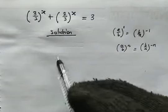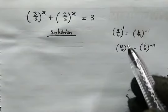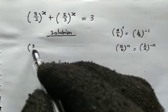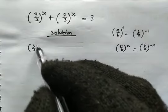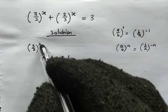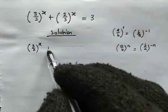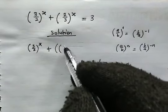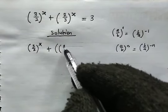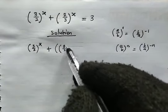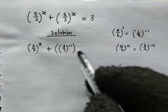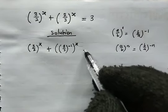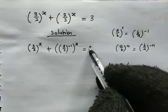From this given equation, we can make use of this property. So we have 3 over 2 raised to the power of x, plus 2 all over 3 — which is the same as 3 over 2 to the power of negative 1 — then raised to the power of x. This is equal to 3.